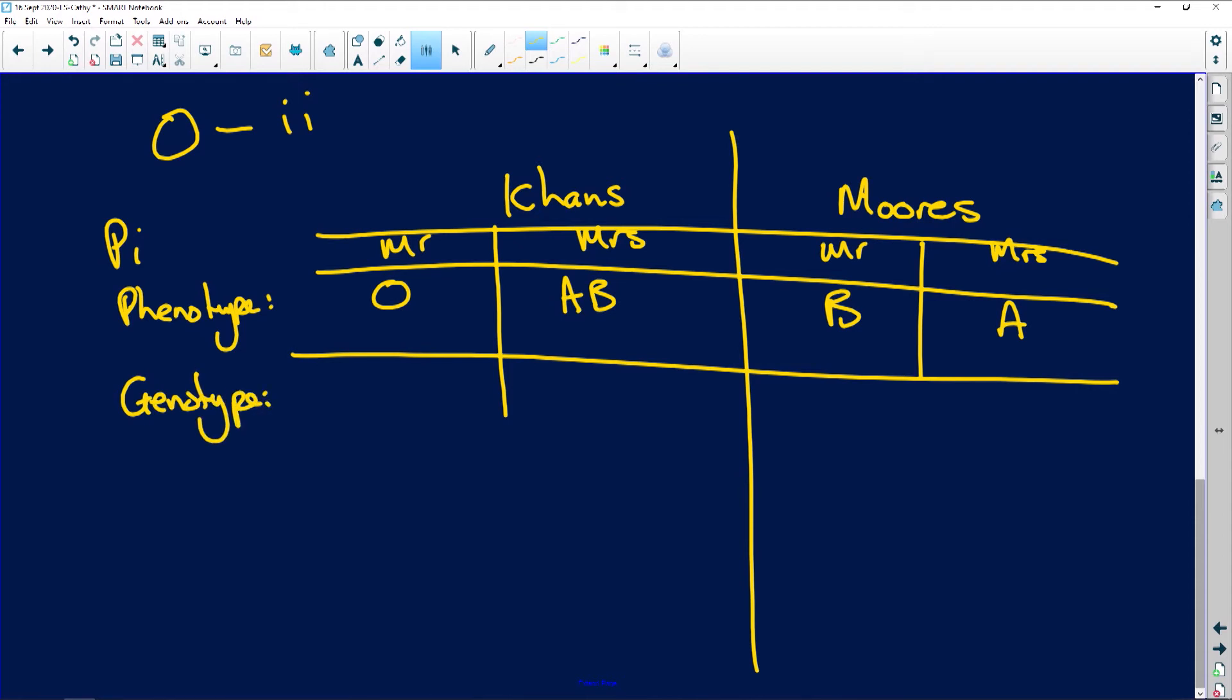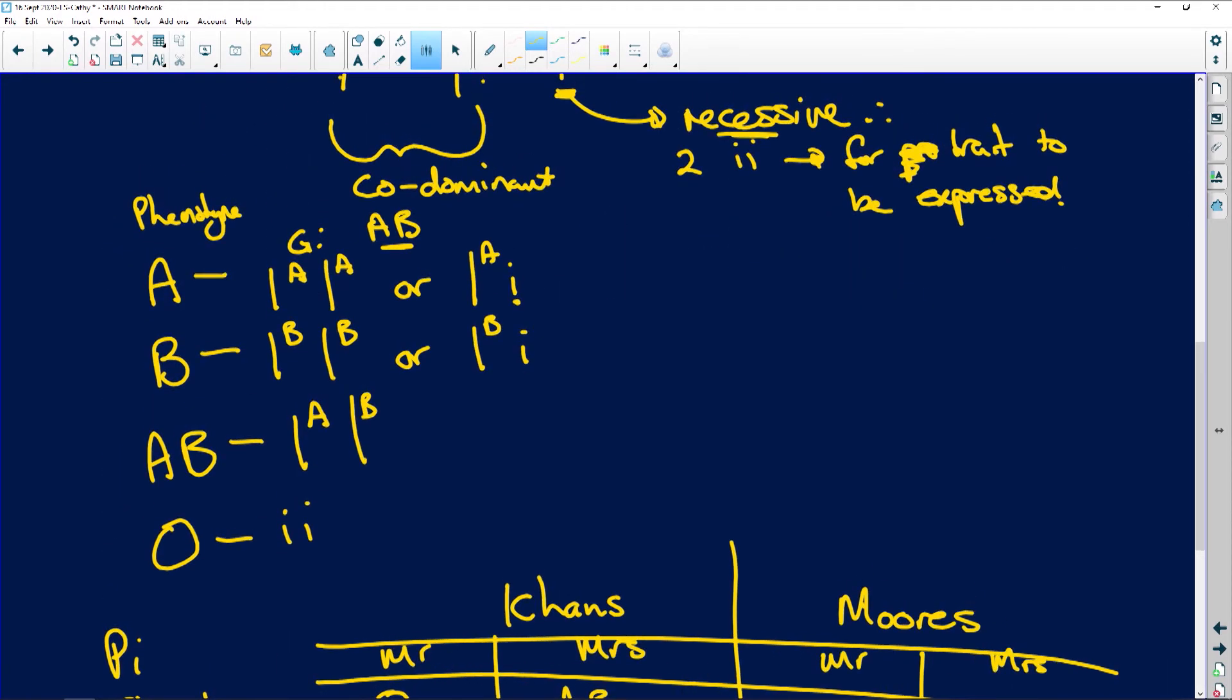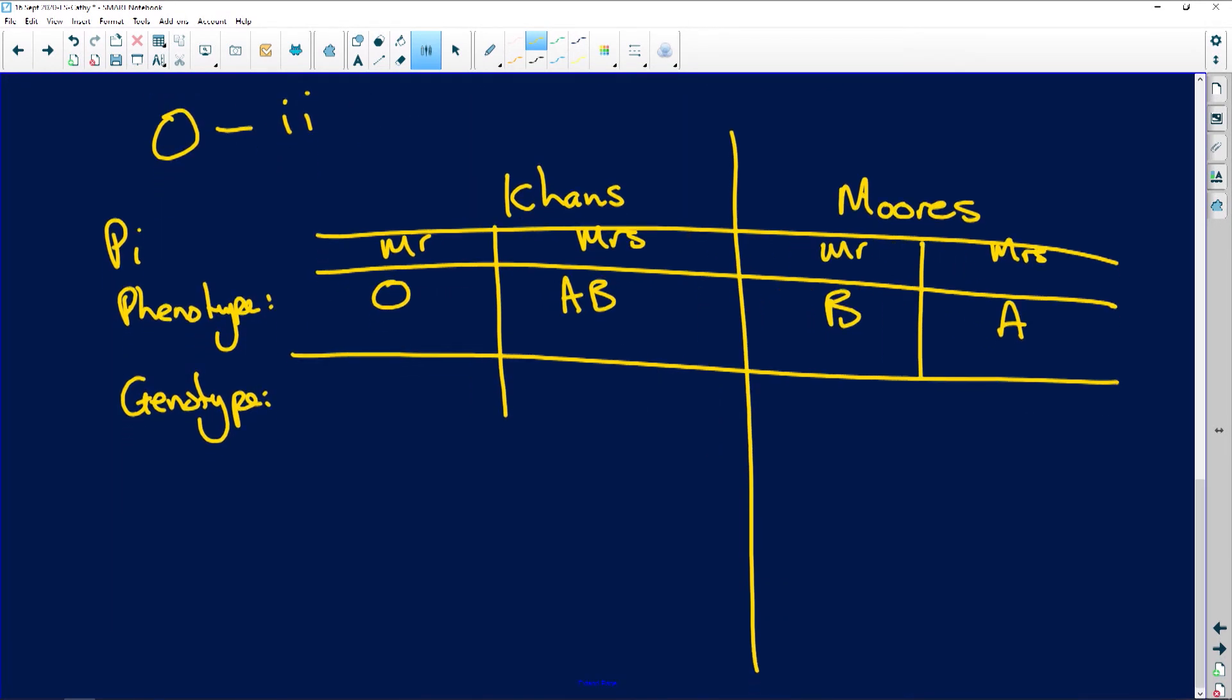If we look at the genotype, based on what I've just told you about our blood groups here, we're going to have Mr. Khan is definitely ii. Mrs. Khan is IA IB. Mr. Muir is B so he can be IB IB...